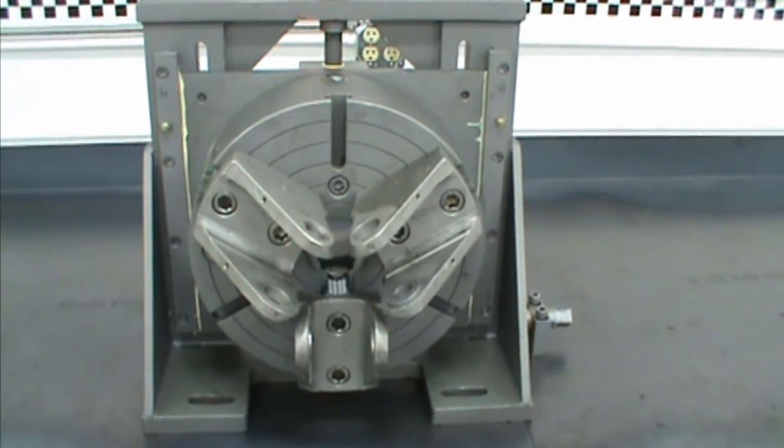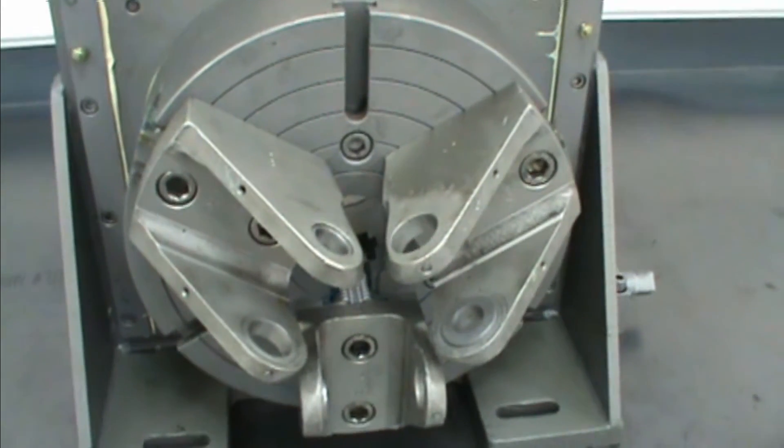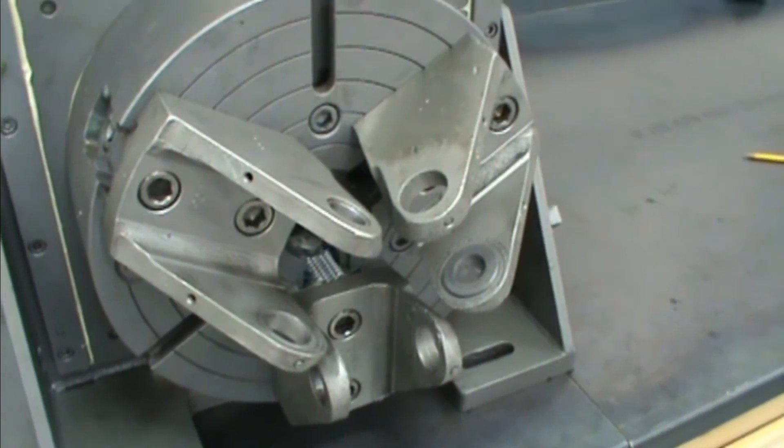Proper setup of the weld box begins with checking the integrity of the unit itself. Here we see a typical chuck style three-roll weld box.